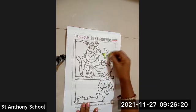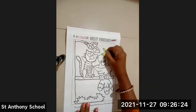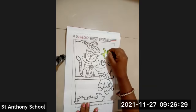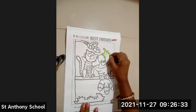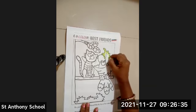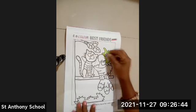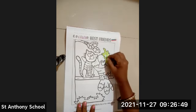See everyone, this is the parrot. When we color, what do we always do? We have an outline first, then we color fill inside the outline.